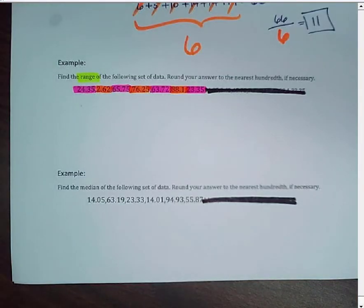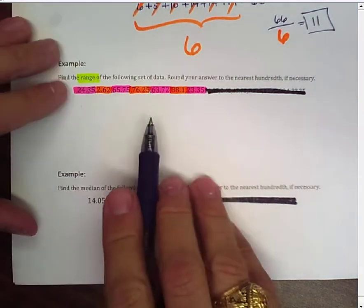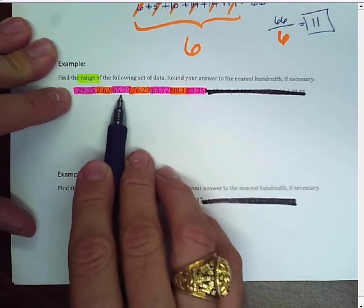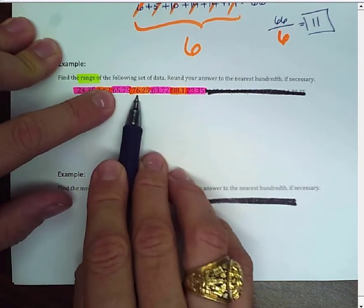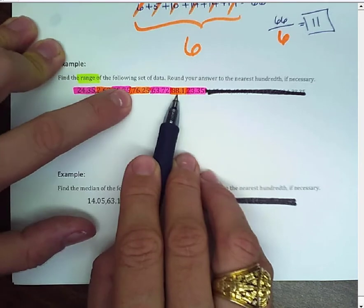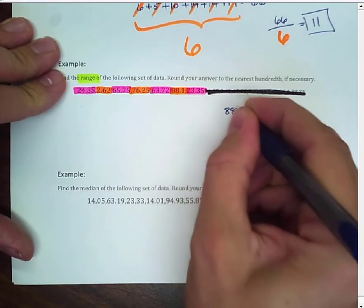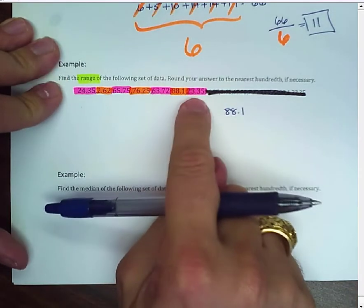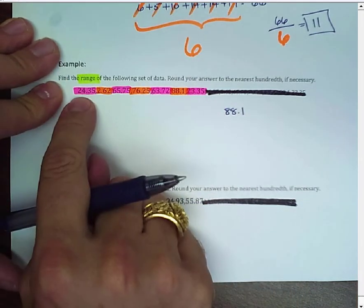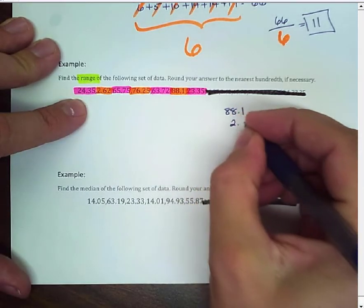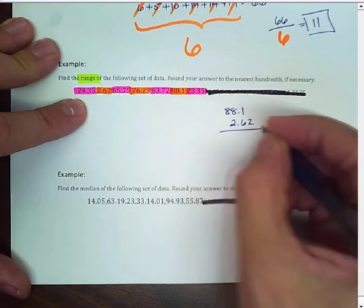Now, I can look for the largest versus the smallest. So, well, I know as I'm going through here, 65 is pretty large, but 76 is larger, and 88.1 is even larger than that. So, I'm going to select my 88.1, and I don't see anything larger than 88.1 here, and it looks like my smallest is going to be 2.62. So, 2.62 is my smallest.